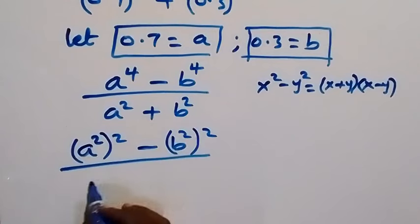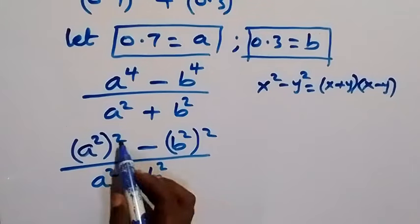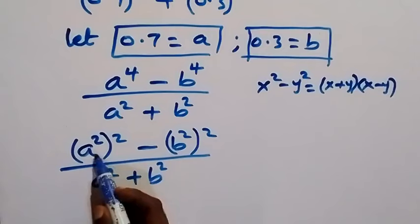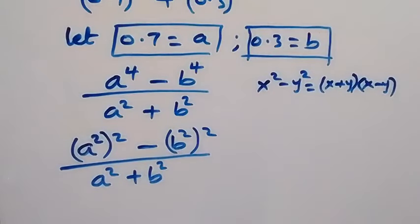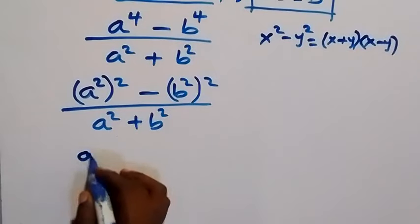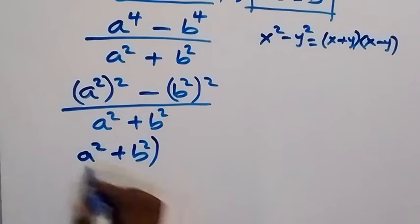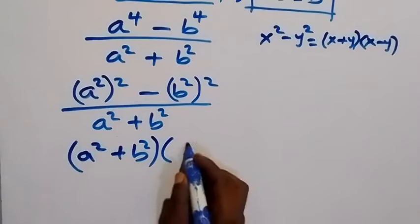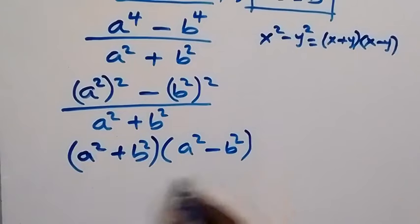Divided by a squared plus b squared. So now that we have difference of two squares, whereby a squared is serving as x and b squared is serving as y, then we can write this as a squared plus b squared multiplied by a squared minus b squared, then divided by a squared plus b squared.